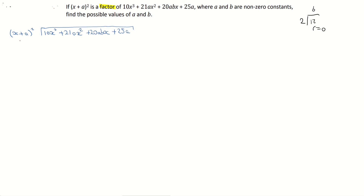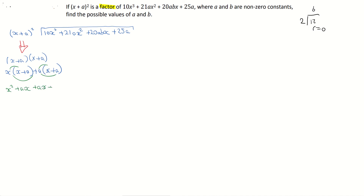First thing I'm going to do is deal with x plus a all squared. I'm going to square that out — a square means you multiply it by itself, so it's x plus a by x plus a. Taking the first term multiplied by the second bracket, second term multiplied by the second bracket, I get x squared plus ax plus ax plus a squared, giving a final expression of x squared plus 2ax plus a squared.